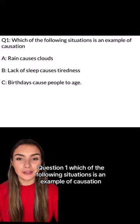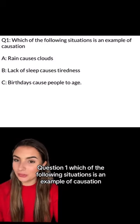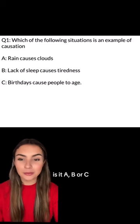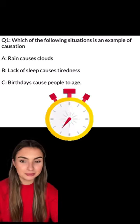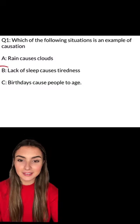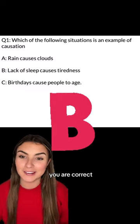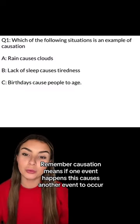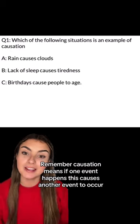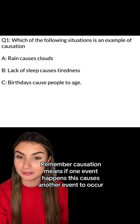Question one: which of the following situations is an example of causation? Is it A, B, or C? If you guessed B, you are correct. Remember, causation means if one event happens, this causes another event to occur.